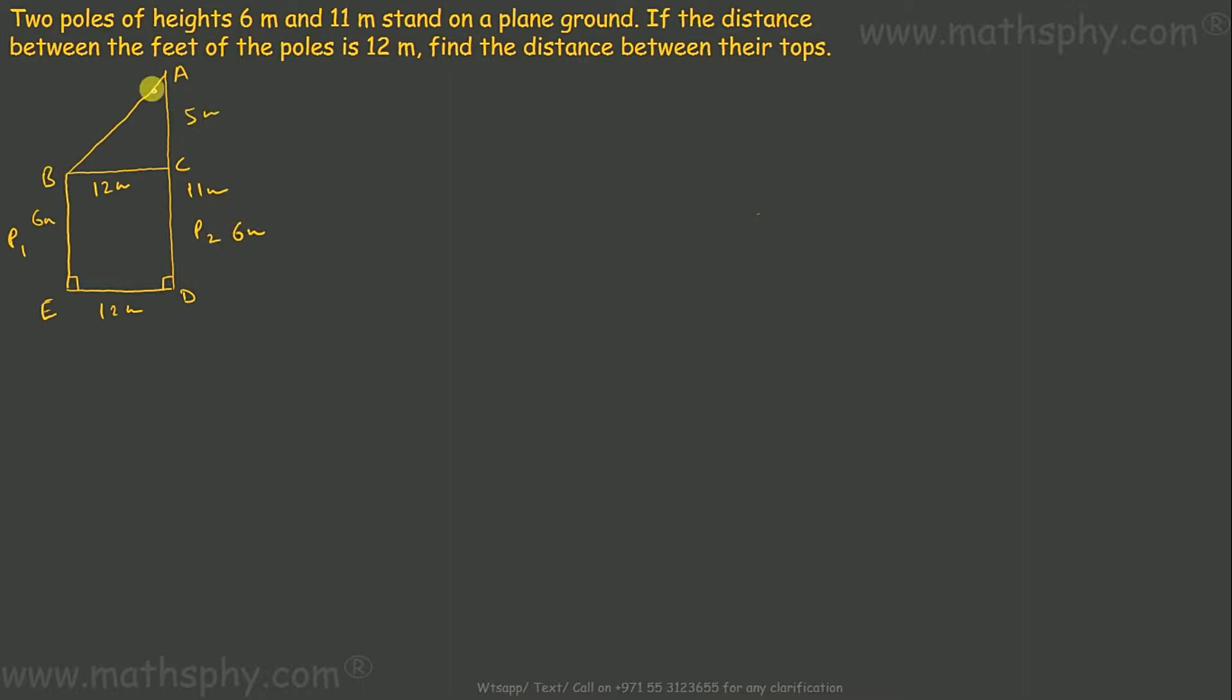I have to find out this one. So write this way: BE is 6 meters, AD is 11 meters, and AD is equal to AC plus CD.